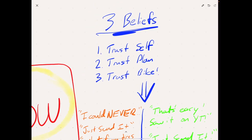These are very simple. The first one is to trust yourself. The second belief is to trust your plan or your intention. And then the third is you literally need to be able to trust your bike, your equipment, your physical steed, your shred sled beneath your feet. You got to trust it.